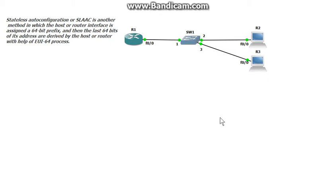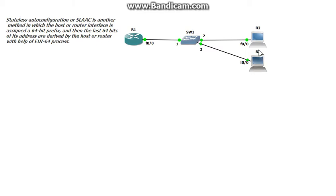In this video I'm going to be demonstrating and configuring stateless auto configuration for IPv6, also known as SLAAC. Stateless auto configuration is a way for routers and hosts to automatically receive an IPv6 address — a global unique address and a link local address. SLAAC gets rid of DHCP for IPv6, so there's no need for a DHCP server.